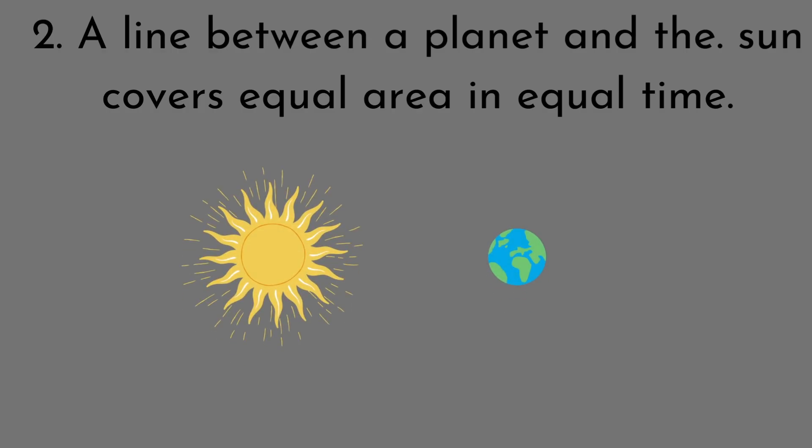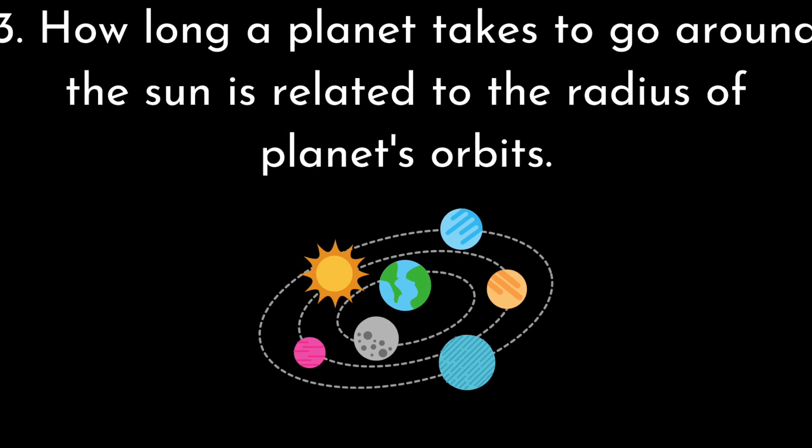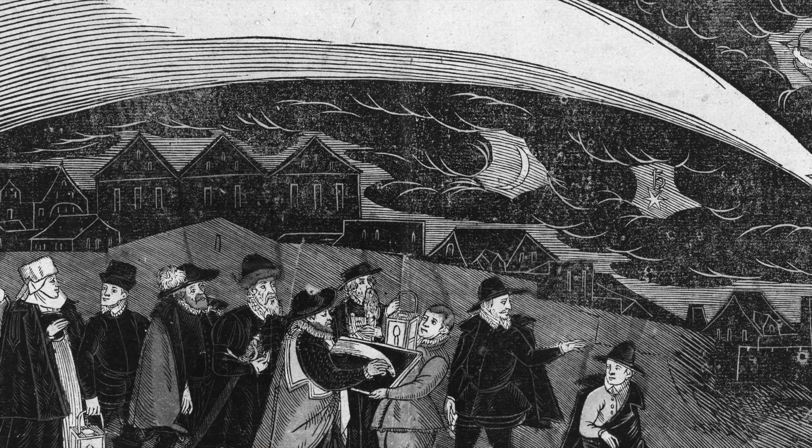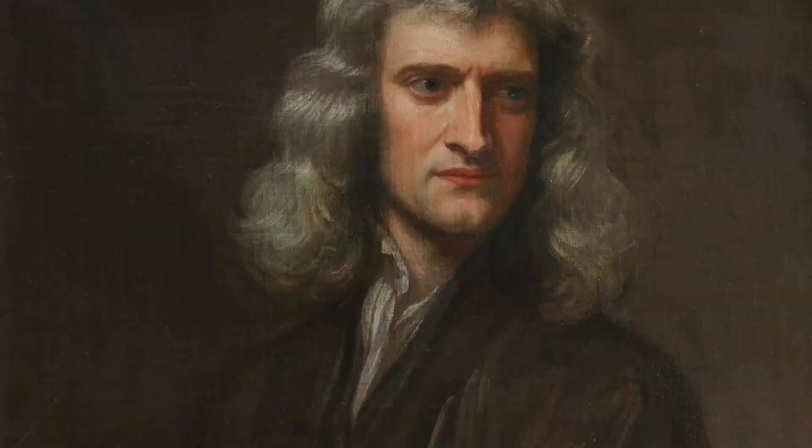A line between a planet and the sun covers equal areas and equal times. And third, how long a planet takes to go around the sun is related to the radius of the planet's orbit. Johannes Kepler and his laws were a great influence on Isaac Newton.